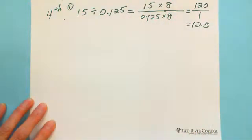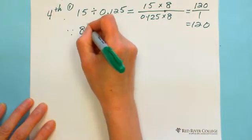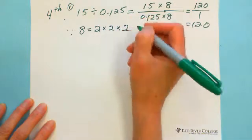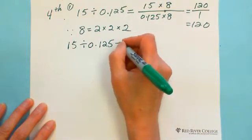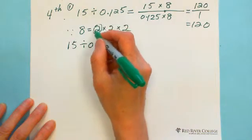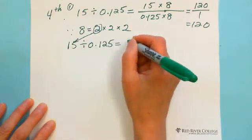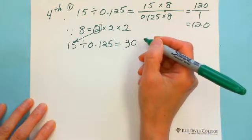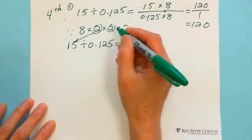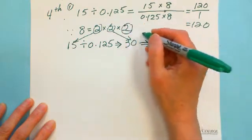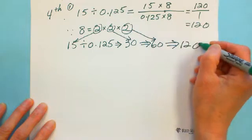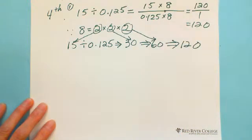If multiplying by 8 feels hard, remember that 8 equals 2 times 2 times 2, so you can just double three times. For 15: double to get 30, double again to get 60, double again to get 120. You don't need to move the decimal three places.